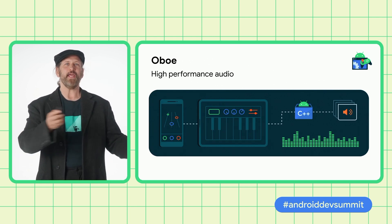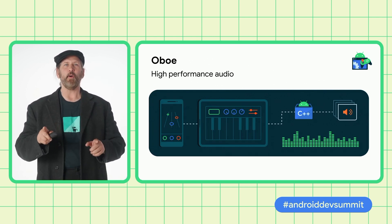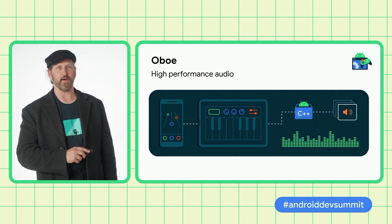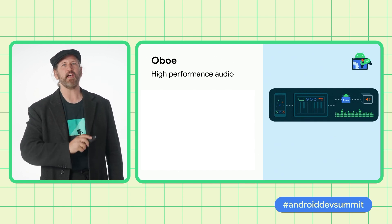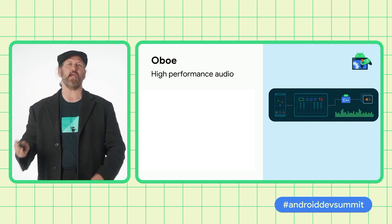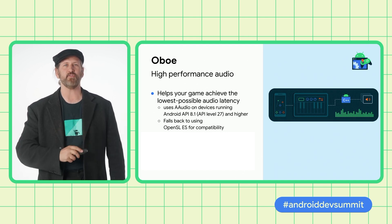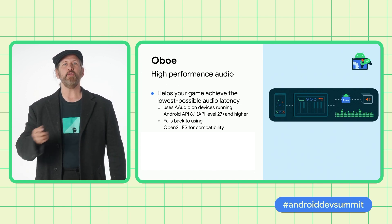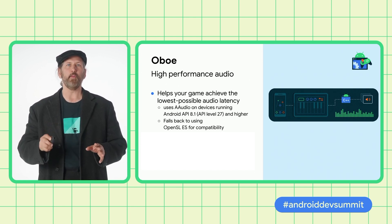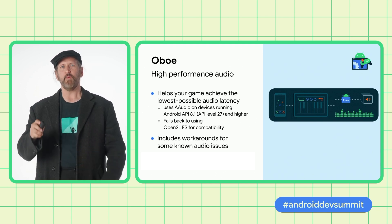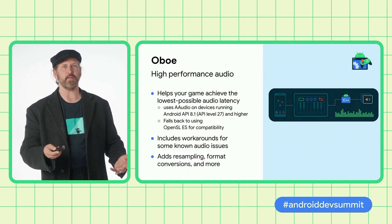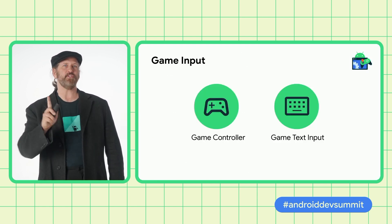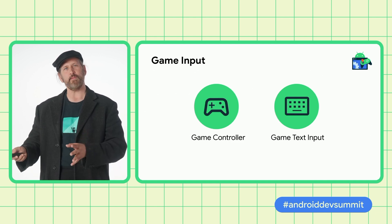Great games need great audio, and the Oboe Audio Library provides a single C++ API that works in Android 4.1 and higher. Oboe helps your game achieve the lowest possible audio latency for a given device and Android version combination by using AAudio on devices running API level 27 and higher. For devices running lower versions, Oboe uses OpenSL ES. Oboe also includes workarounds for some known audio issues, while adding new features such as resampling, format conversions, and performance-based channel count conversions.